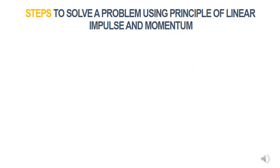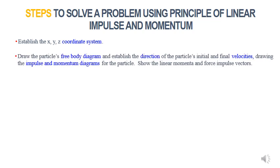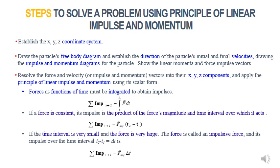To solve a problem using the principle of impulse and momentum, follow these steps. First, establish the x, y, z coordinate system. Next, draw the particle's free body diagram, establish the direction of the particle's initial and final velocities, and draw the impulse and momentum diagrams. Show the linear momenta and force impulse vectors. Finally, resolve the force and velocity, or impulse and momentum, vectors into their x, y, z components and apply the principle of linear impulse and momentum using its scalar form. Note that when forces are functions of time, they must be integrated to obtain impulses. If a force is constant, its impulse is the product of the force's magnitude and the time interval. If the time interval is very small and the force is very large, the force is called an impulsive force, and its impulse equals F average multiplied by delta T.